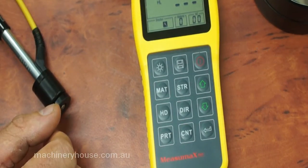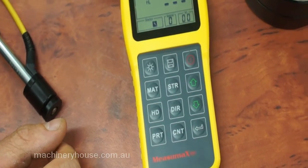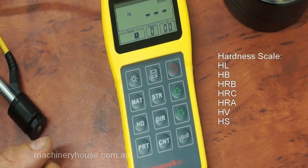HD button. Pressing the HD button will allow you to toggle through the hardness scales of your choice. Please note the scales available are related to the material selected and the probe.